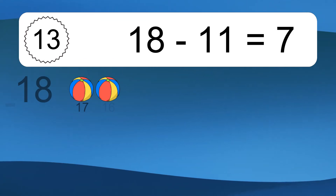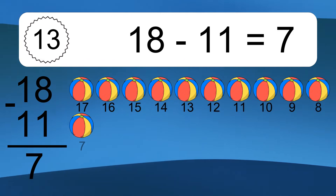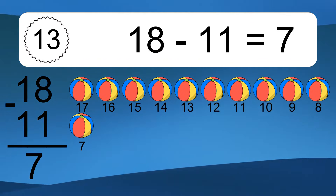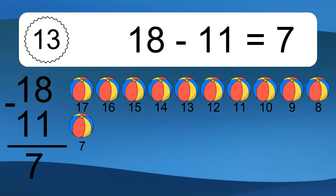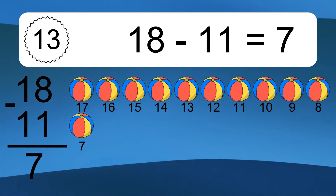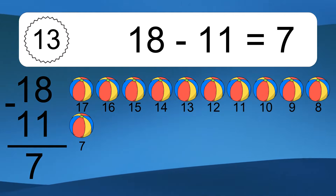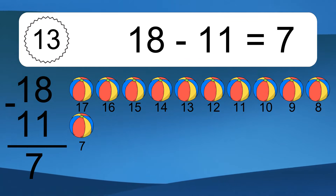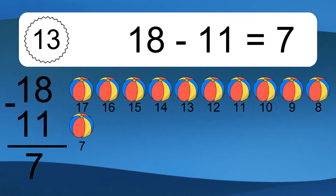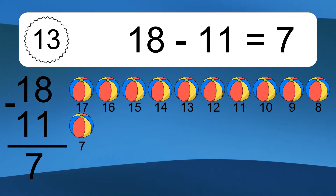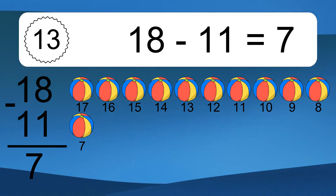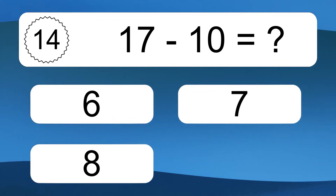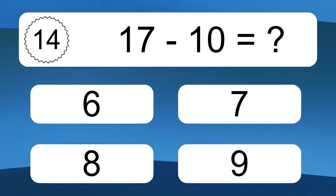18 minus 11 equals 7. Let's count it: 17, 16, 15, 14, 13, 12, 11, 10, 9, 8, 7. 17 minus 10 equals what?